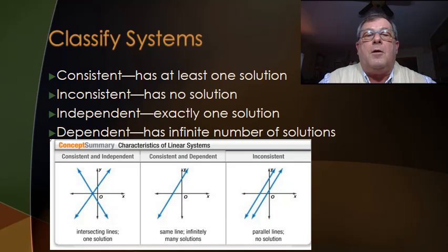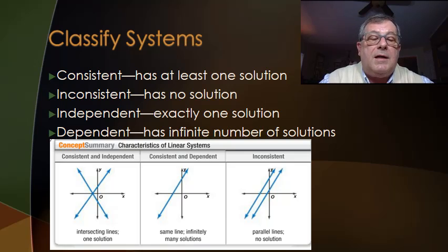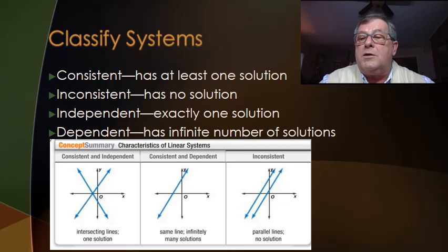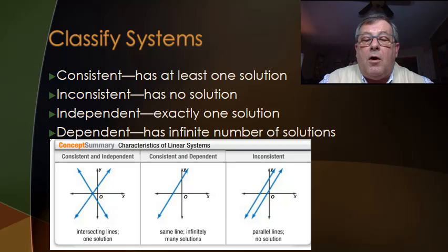If there are an infinite number of solutions — the equations of the lines are exactly the same — then that is consistent and dependent. Looking at the chart, the first example on the left is consistent and independent: two lines with one point of intersection, meaning one solution. In the middle, consistent and dependent — they are in fact the same line, so there are infinitely many solutions. The third example shows two parallel lines, which we call inconsistent — no solution to the system.